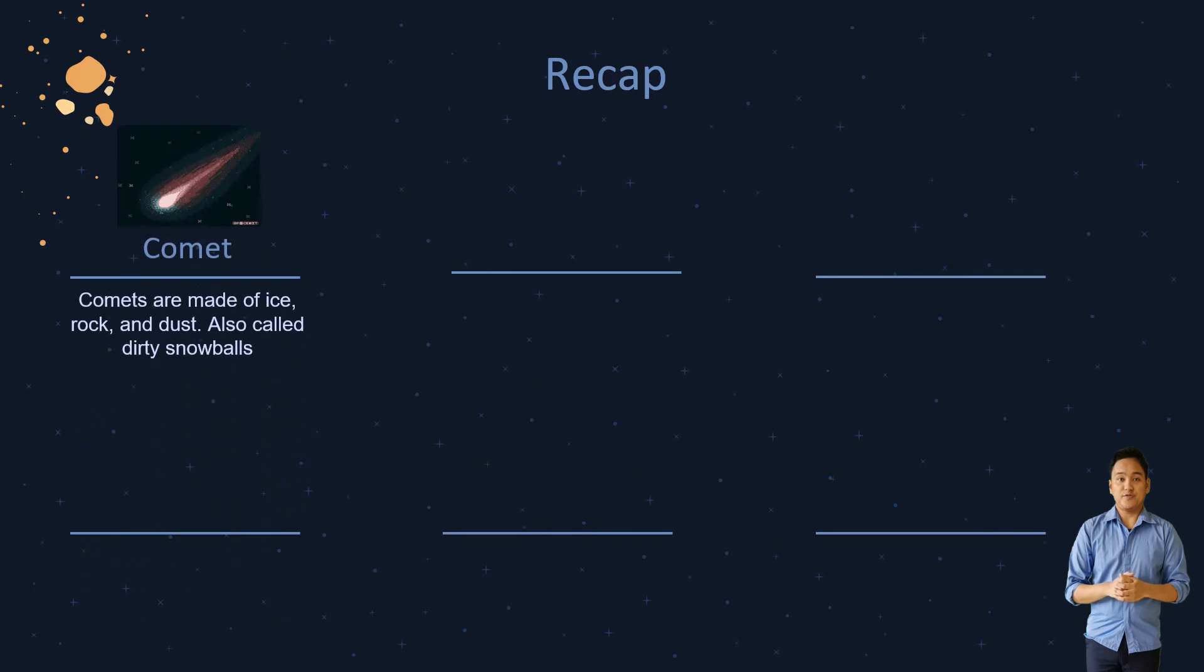Comets are made of ice and dust and they are sometimes called dirty snowballs. As the comet heats up, it forms a cloud around it called a coma. At the center of the comet is the nucleus. A comet also has a tail that is made from vaporized ice and dust.